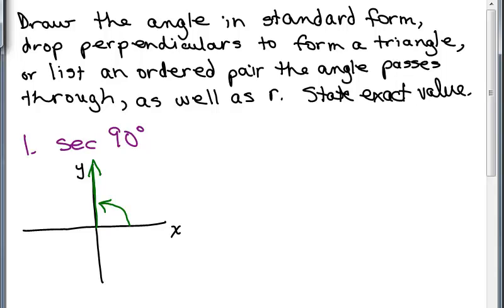So we either drop a perpendicular to form a triangle. This doesn't form a triangle or list an ordered pair that angle passes through and R. So let's see. This ordered pair is 0, 1. That's one of the ordered pairs that goes through. And my R right here can be considered 1.